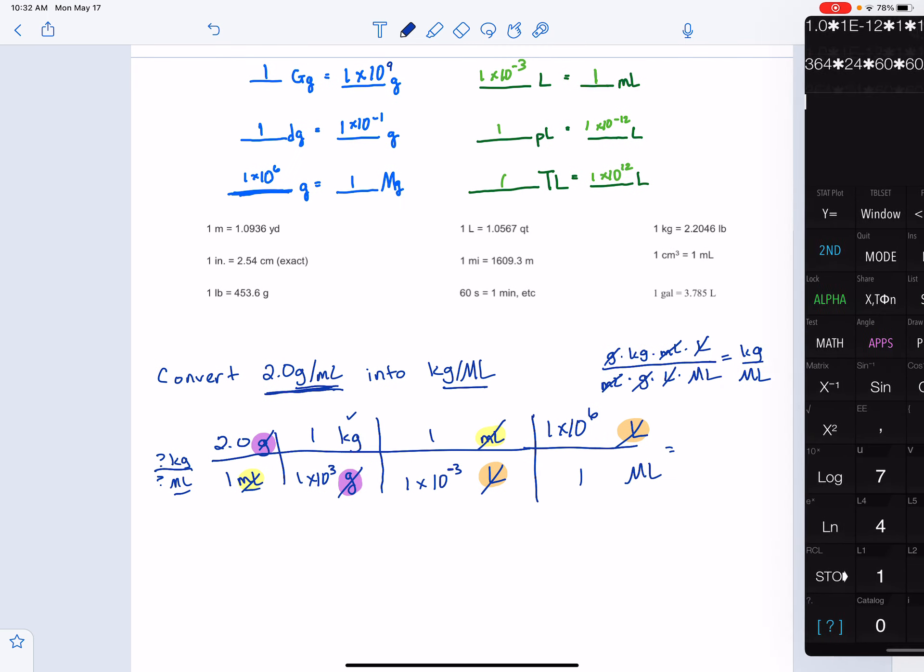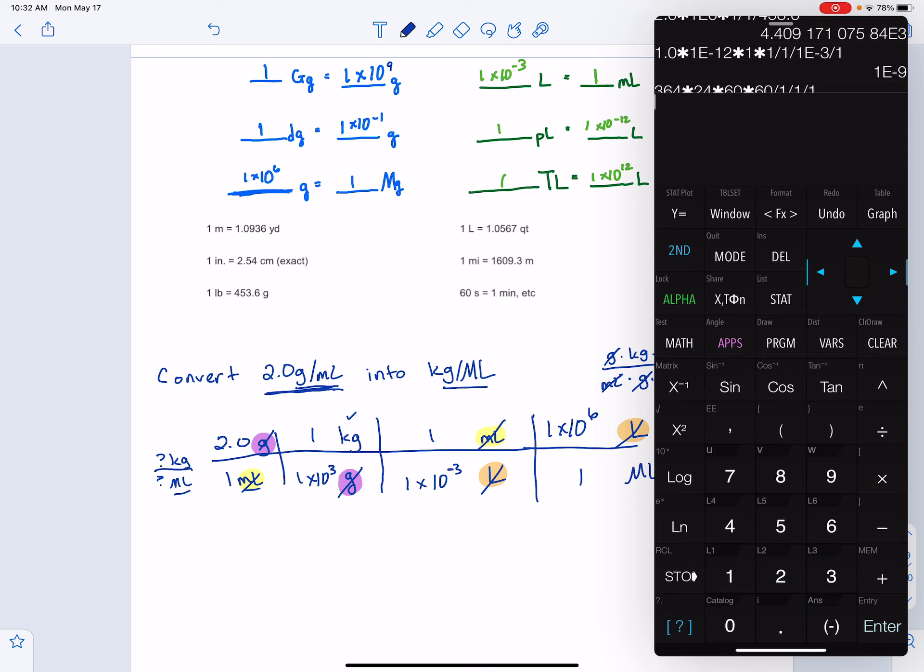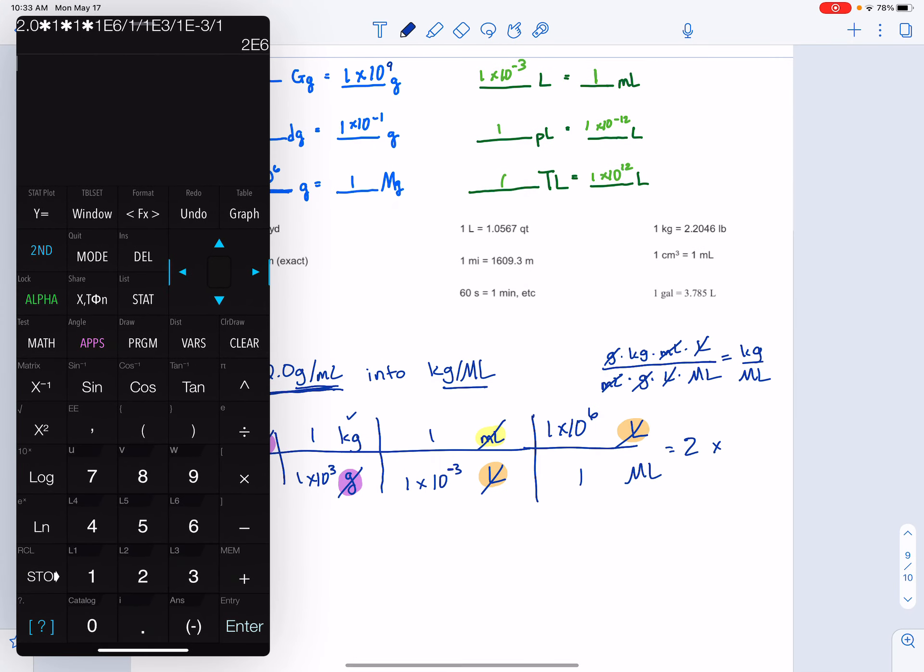And then when I fill this in, I'm going to go across the top, 2.0 times one times one times one times ten to the sixth, divided by one times ten to the third, divided by one times ten to the negative three, divided by one. And this turns out to be two times ten to the sixth, and that will be kilograms per megaliter.